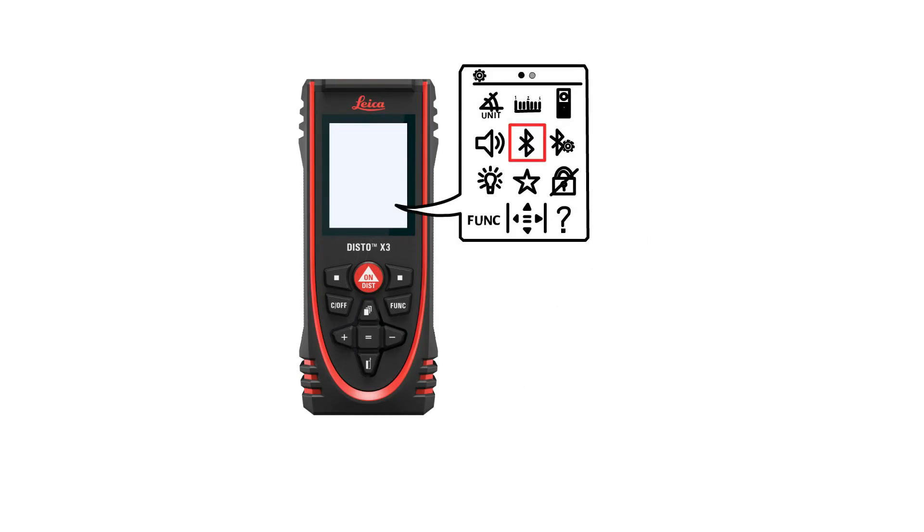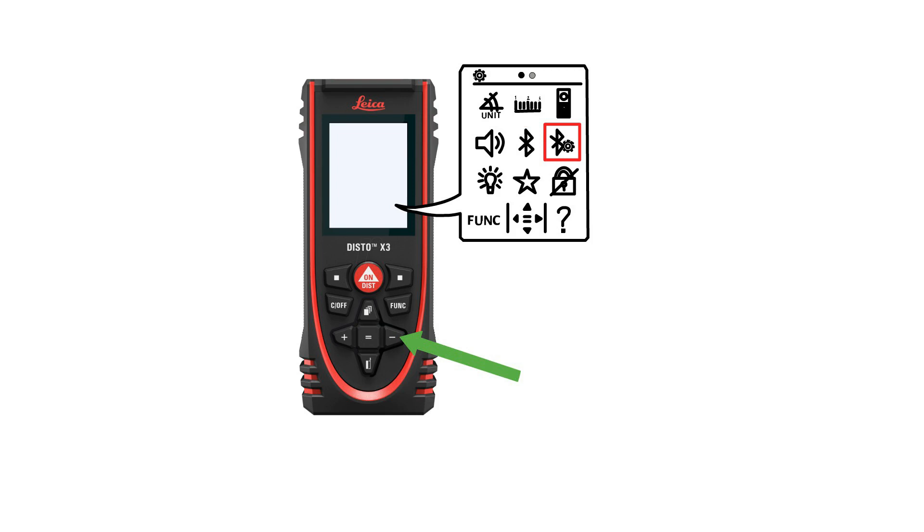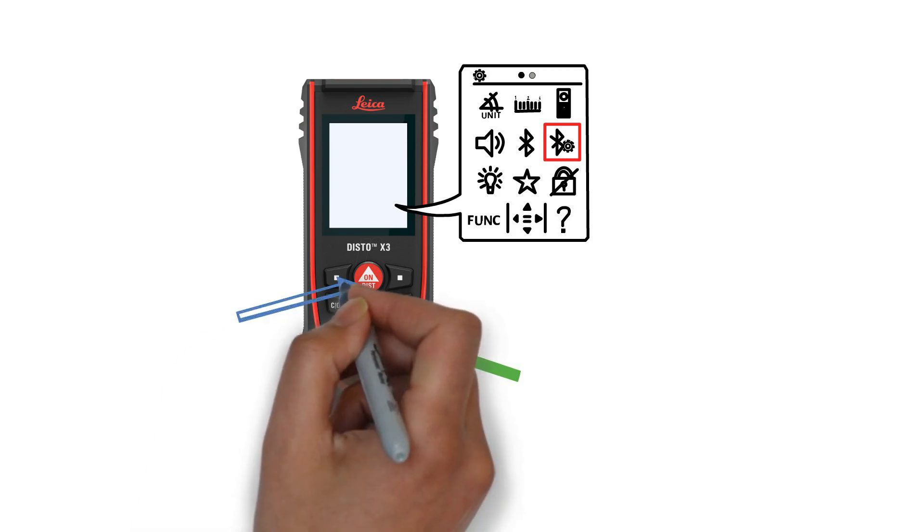You will see two different Bluetooth icons. Press the right arrow key once to navigate to the Bluetooth icon with the gear, then press the red ON button.